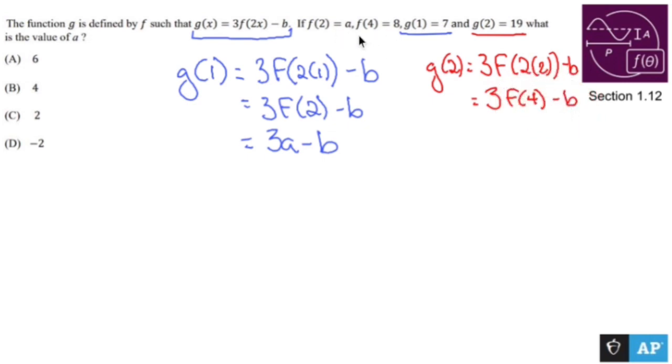Oh, look. f of 4 is 8. So 3 times 8 minus b is going to be 3 times 8, which is 24, minus b. Now, this is what else we know. Because right now I'm not really getting anywhere, but here's what else I know.